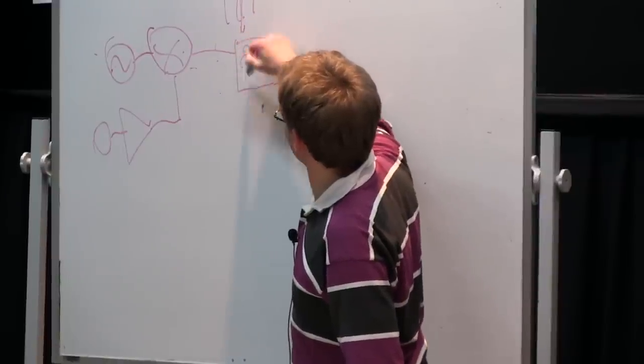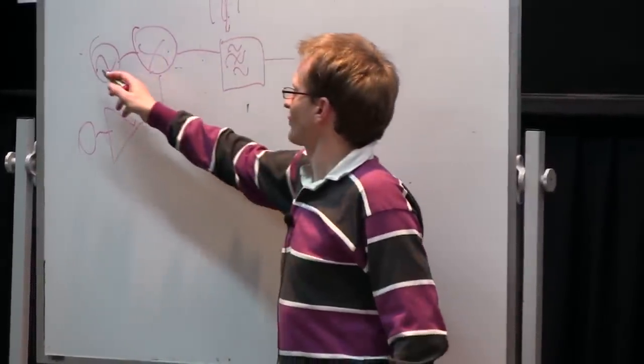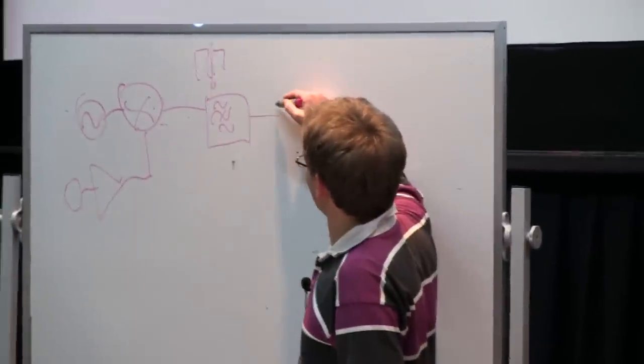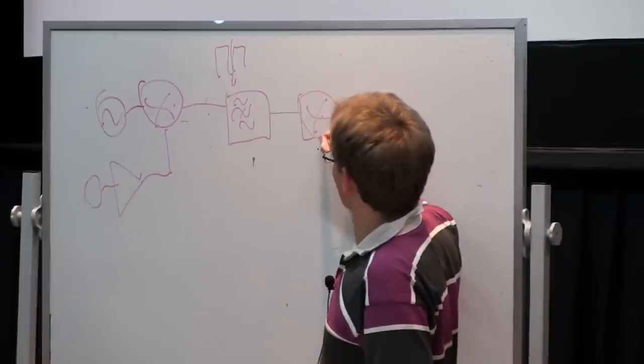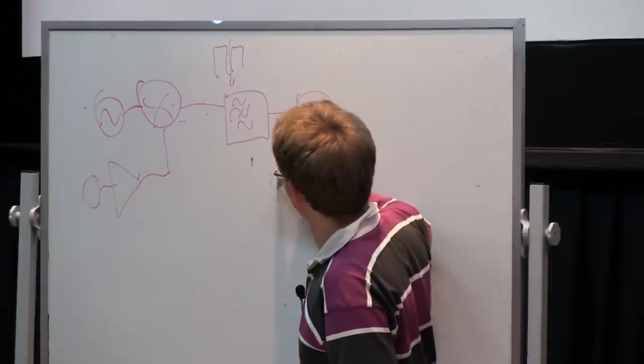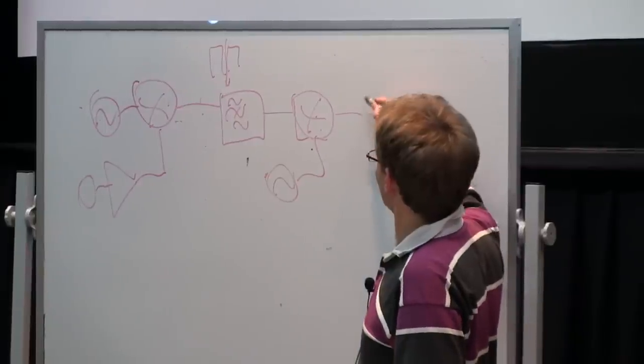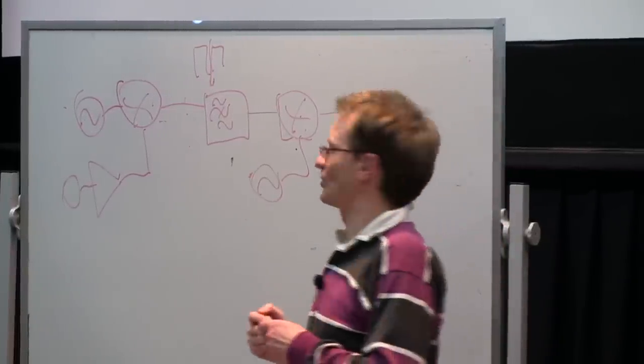For SSB, then you want to put it through a filter which chops off one half. Because that's normally crystal controlled on one frequency, you then have to mix it with another mixer, you need another local oscillator, usually a VFO, and then you have to amplify that. So that's your basic filter SSB transmitter.